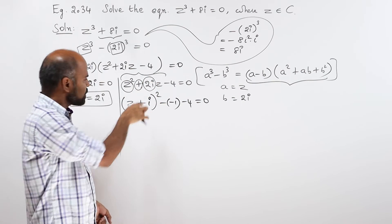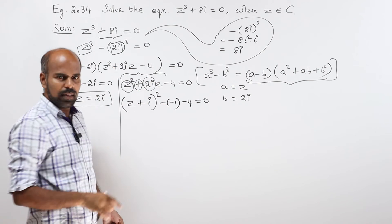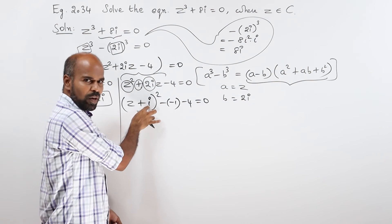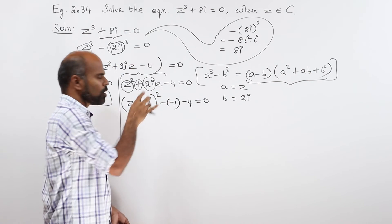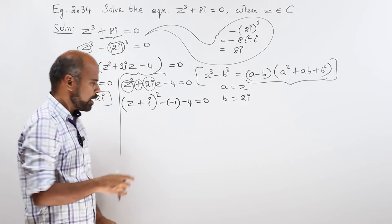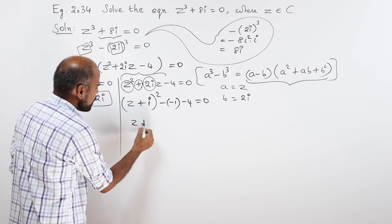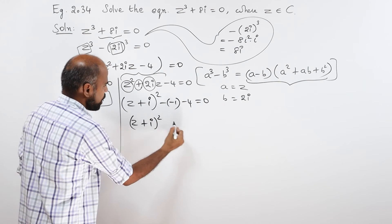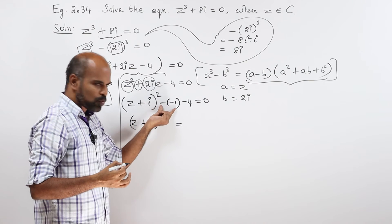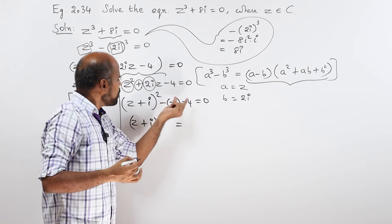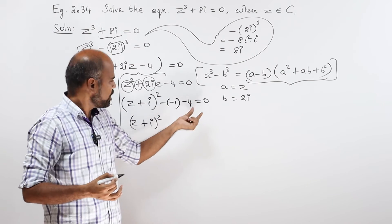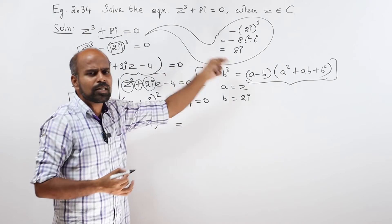Cancel i. The whole square minus i square, and i square is minus 1. So simplification gives minus 4 equal to 0. That is the step: z plus i the whole square is equal to minus of minus 1 plus 1 minus 4, which is plus 1 minus 4, giving minus 3.